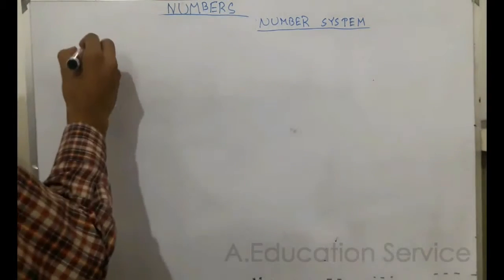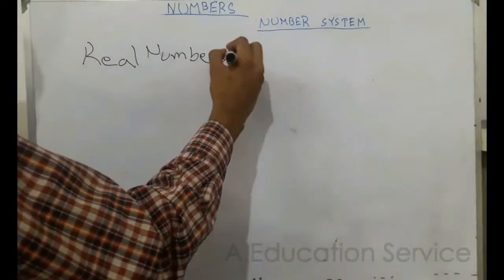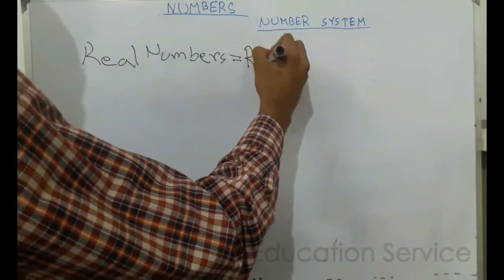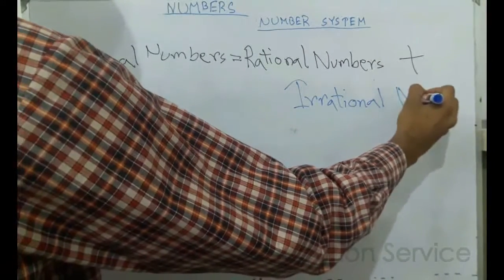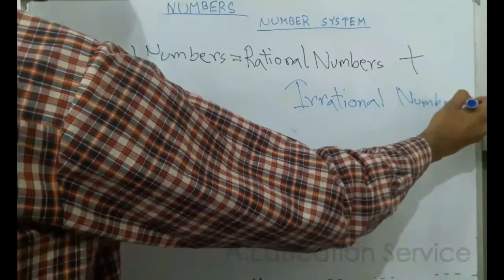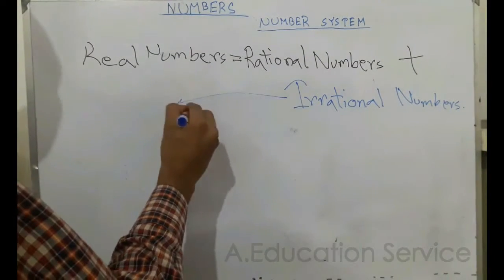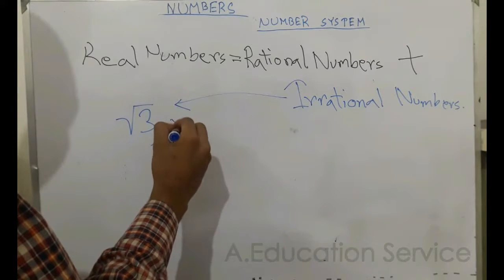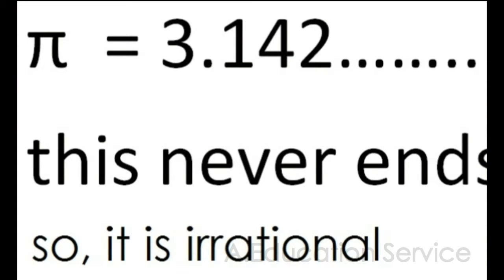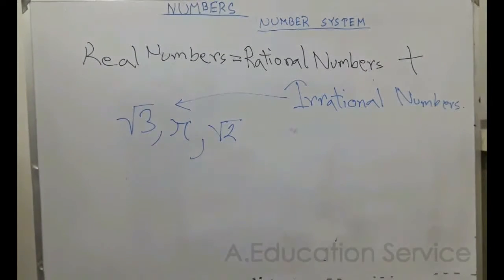We are going to start with real numbers. Real numbers include rational and irrational numbers, so you can write: real numbers equals rational numbers plus irrational numbers. Irrational numbers are numbers that cannot be written as fractions. For example, root three, pi, and root two are all irrational numbers.